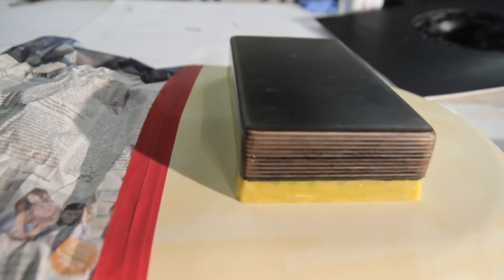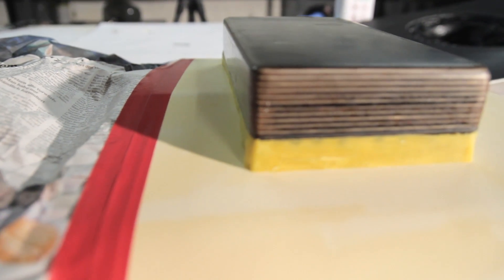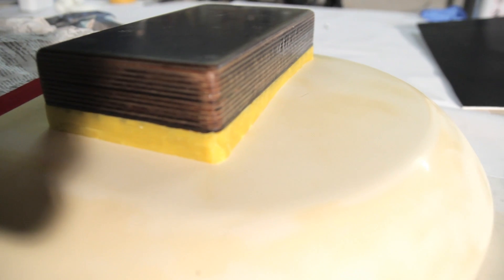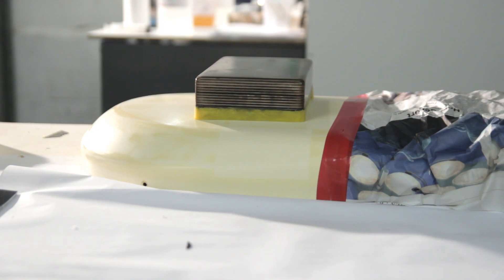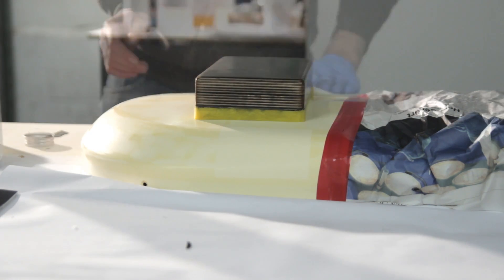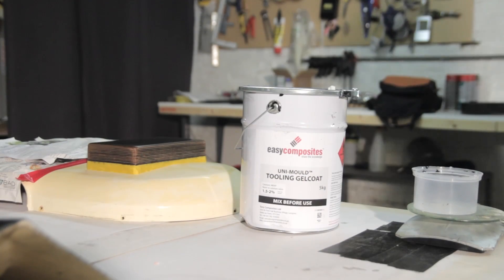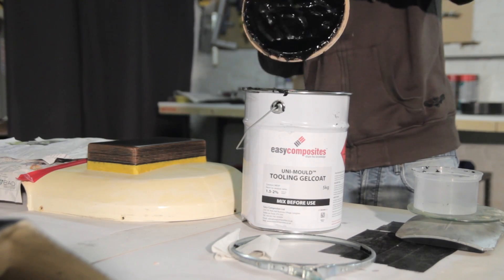Fiberglass on fiberglass can be risky, so make sure you have enough release. I've added some modeling clay just to make the transition from the box to the piece.